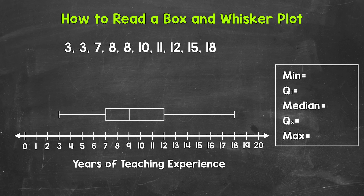They give us a visual. Let's jump into our example and see exactly how to read and interpret a box and whisker plot. For our example, we're going to be looking at years of teaching experience. So 10 teachers were surveyed, and here are the results. This is years of teaching experience. This data is in order from least to greatest, and the box and whisker plot has been created below.